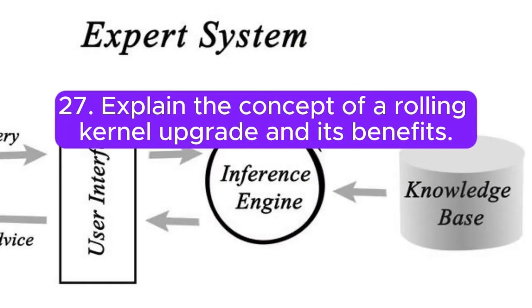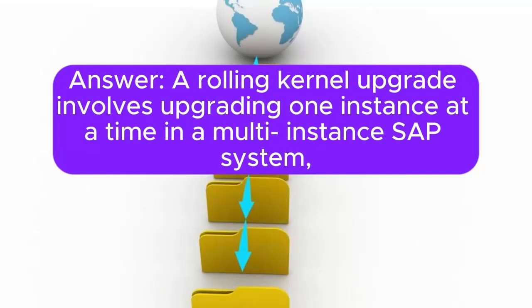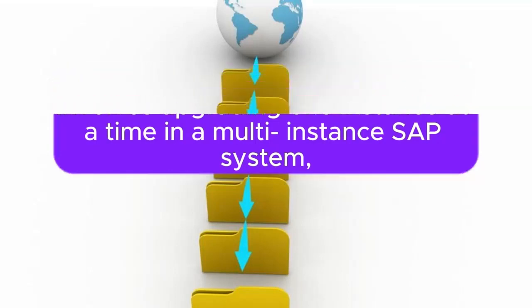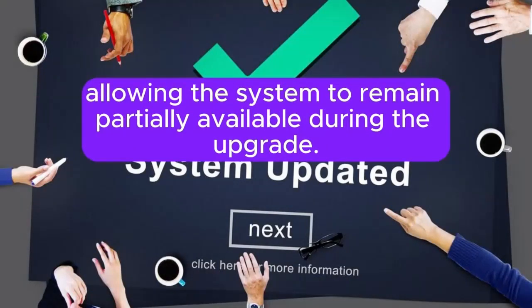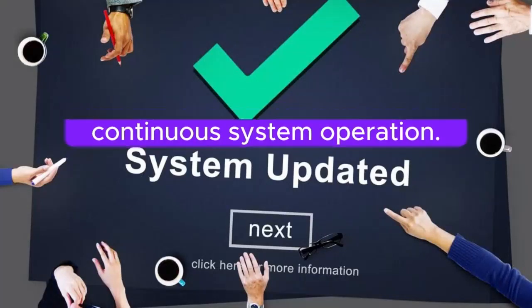27. Explain the concept of a rolling kernel upgrade and its benefits. A rolling kernel upgrade involves upgrading one instance at a time in a multi-instance SAP system, allowing the system to remain partially available during the upgrade. It reduces downtime and ensures continuous system operation.